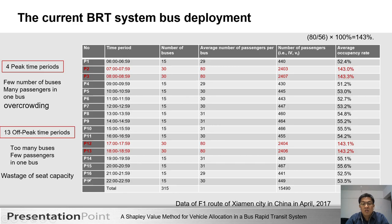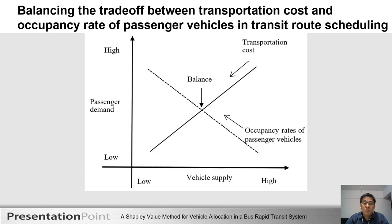This BRT system also wastes bus capacity in the off-peak time period from P1 and P4 to P17, because there are many buses and few passengers per bus. The average occupation rate per bus is 55%.